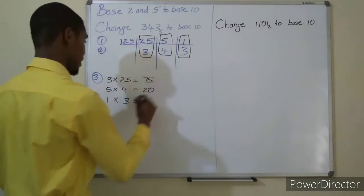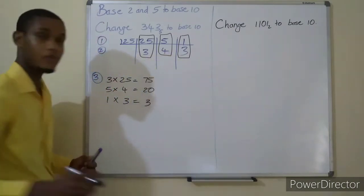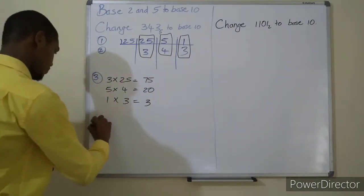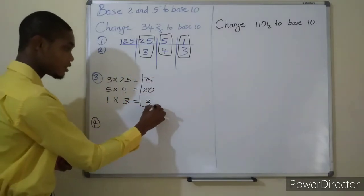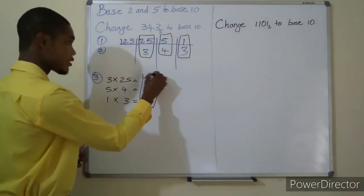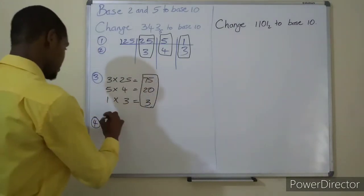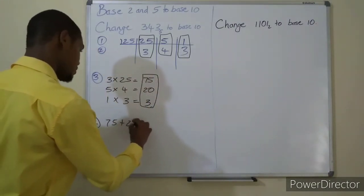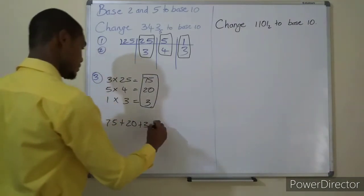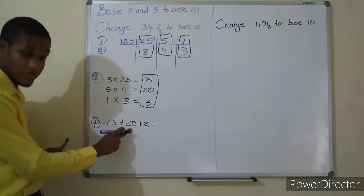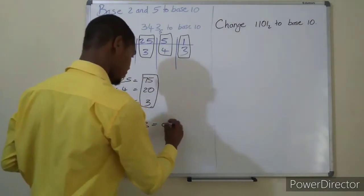Three times twenty-five gives you seventy-five, five times four gives you twenty, and one times three is three. Now step four is the final step. Whatever your answers are for the multiplication process, or whatever the products are, you will add them together. So that's 75 plus 20 plus 3.